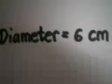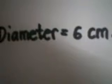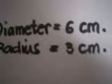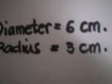Let us now measure this. Let us put the mark here. Put the ball here and the ruler. And let's put a mark here. Now we have the diameter, which is 6 centimeters. Half of that is the radius, which is 3 centimeters.